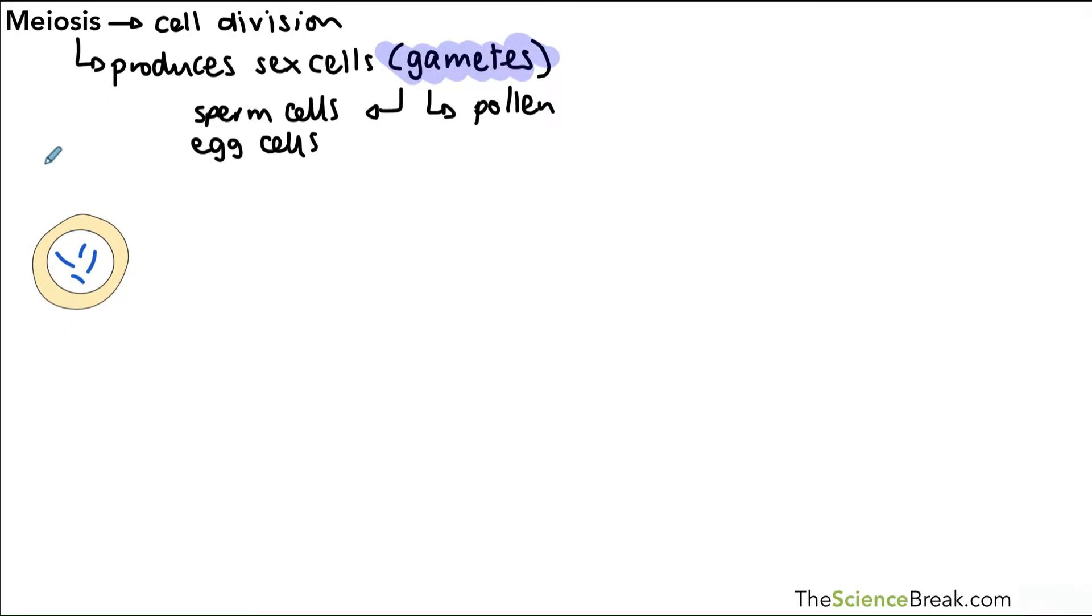This process of cell division produces gametes, which include sperm cells, egg cells, and pollen. We start off with a parent cell, and this parent cell has what we call a double set of chromosomes. You can see there the genetic material is in the form of chromosomes.